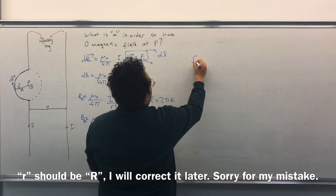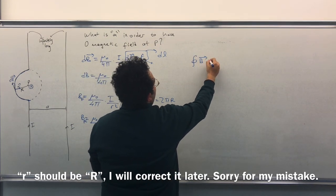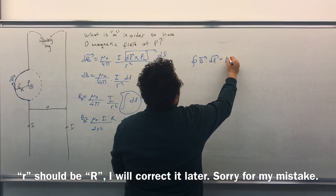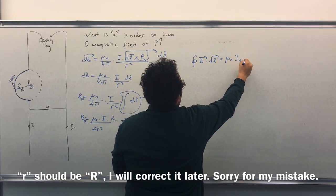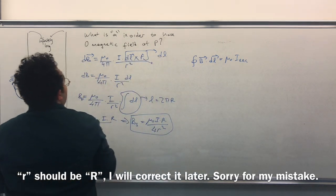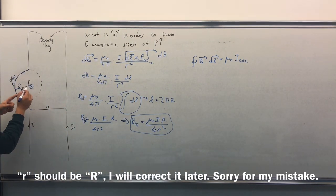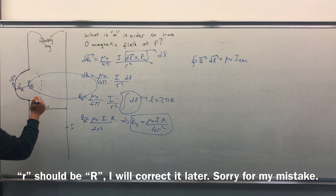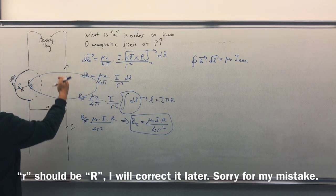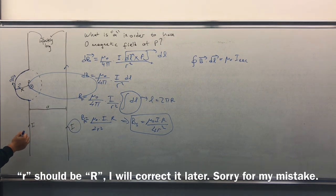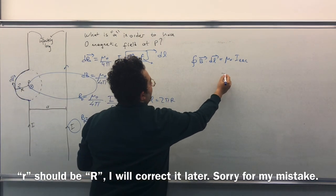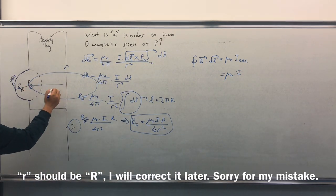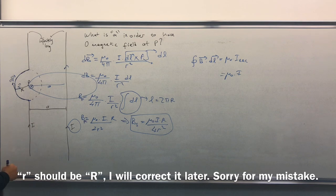It was integral B dot dL equals to mu zero times I enclosed. Now if we take a circle like this, we have I enclosed as I, so mu zero times I. And this radius is A.